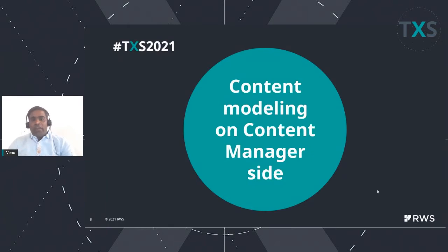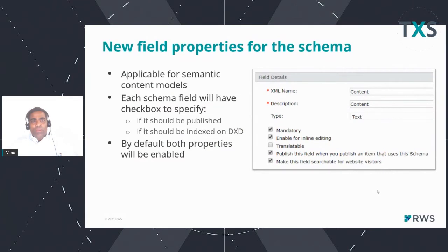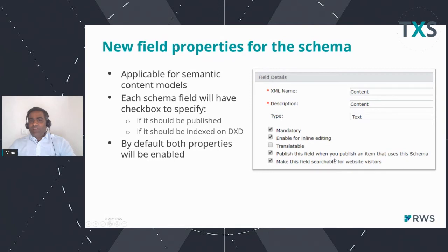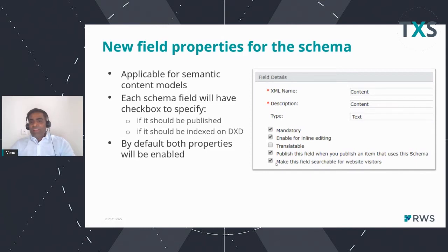To build this on the content manager side, a new field property has been introduced on the schema. While you're defining your schema, there is a new property called 'publish this field when you publish an item that uses the schema.' You can either choose that option or untick it not to publish it. If you want to develop your website using this semantic content model, you need to make sure that checkbox is checked. Each schema field has this option.